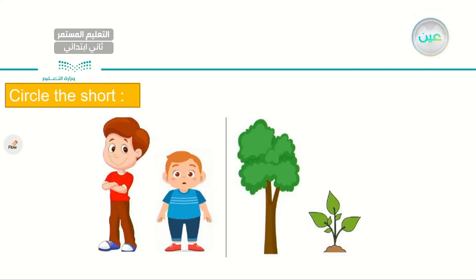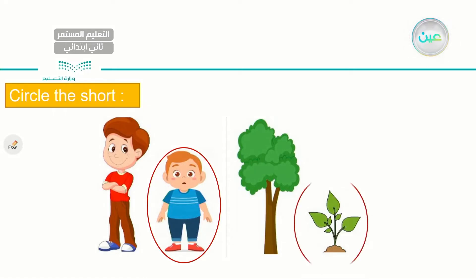Let me check your understanding, my dear student. Circle the short one. To your left I have two boys — circle the short boy. The one with the blue shirt is the short boy. Also, I have a tree and a small plant. Circle the short one — the short one is this small plant. That's what we mean by short.